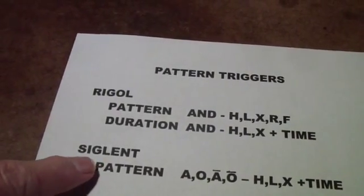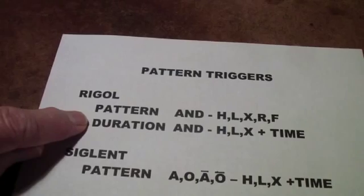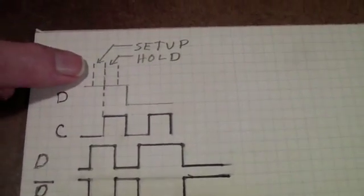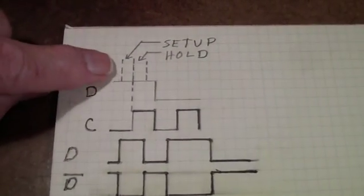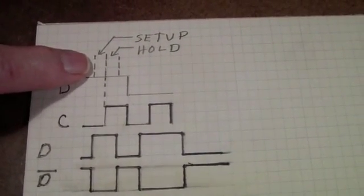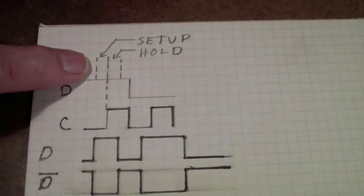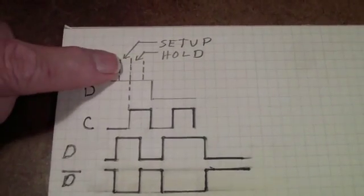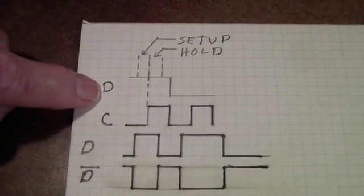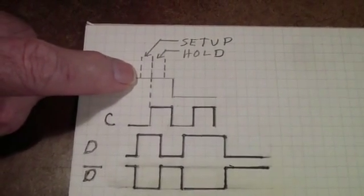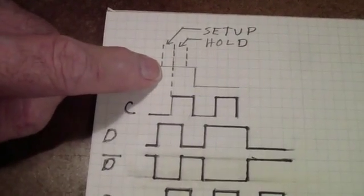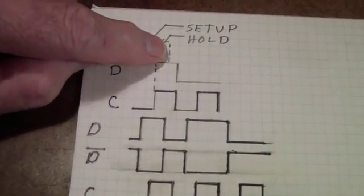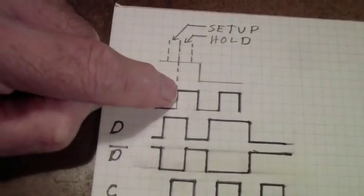I'm going to primarily compare the pattern trigger of the Siglent to the duration trigger of the Rigol. Here is a sketch I've prepared to illustrate how you could use a pattern trigger that has timing — in other words, either the duration trigger of the Rigol or the pattern trigger of the Siglent — to trigger on setup or hold violations. What I have shown here is the data line, and the setup time is the time that the data line must be high before the clock goes high. The hold is the time that the data must remain stable after the clock transition.